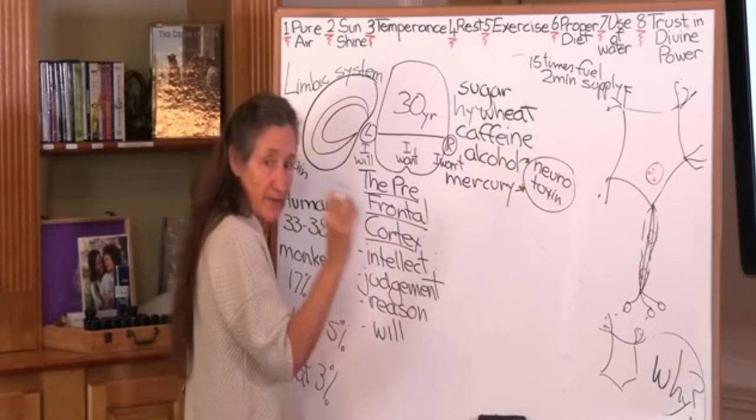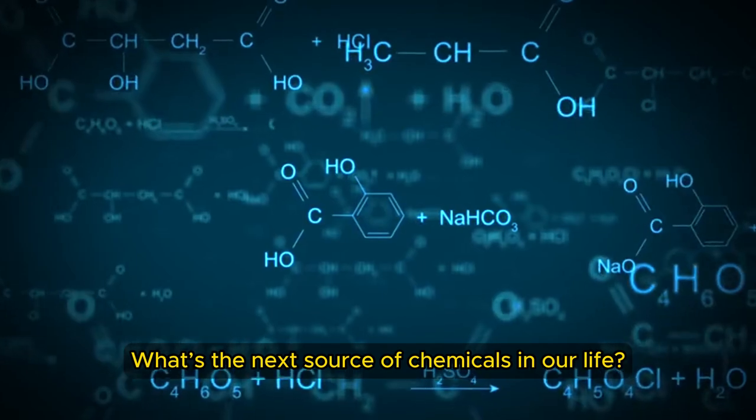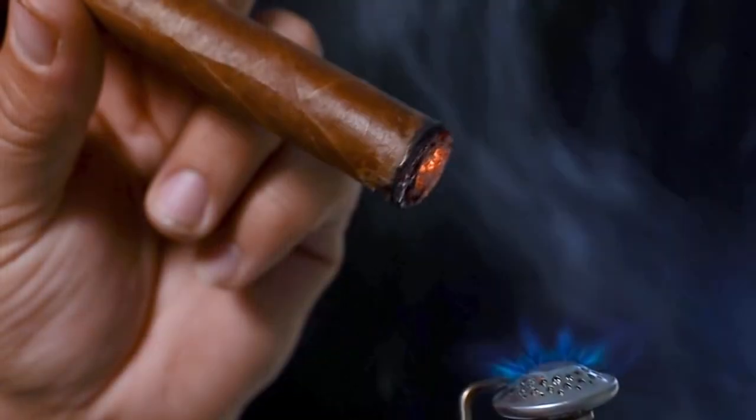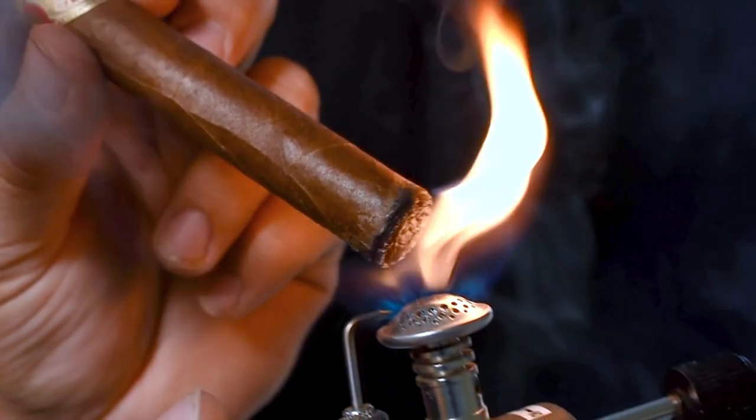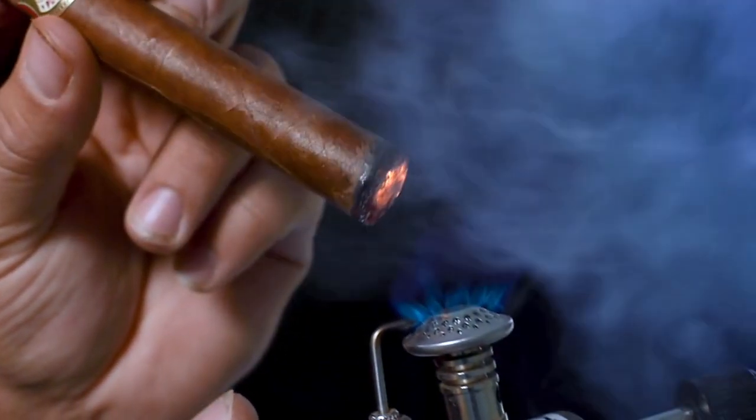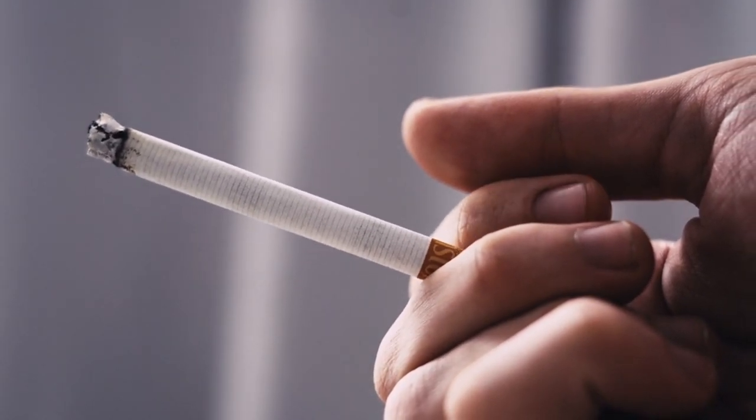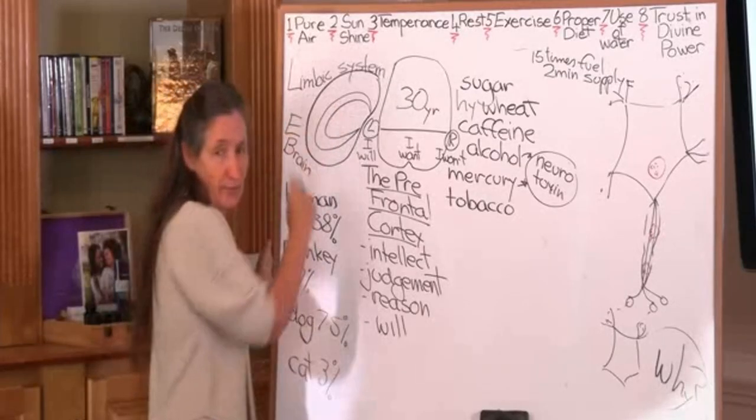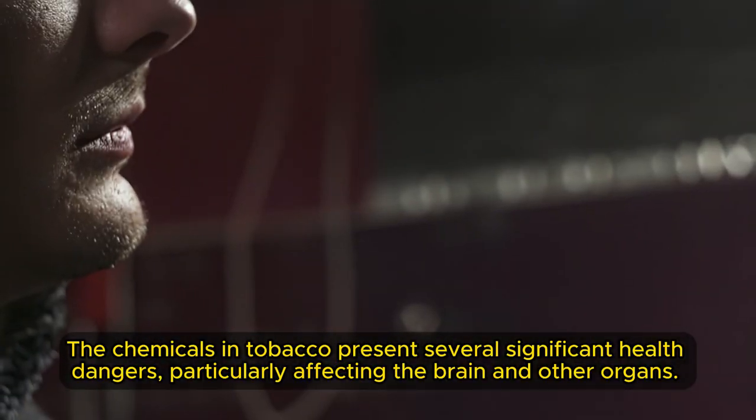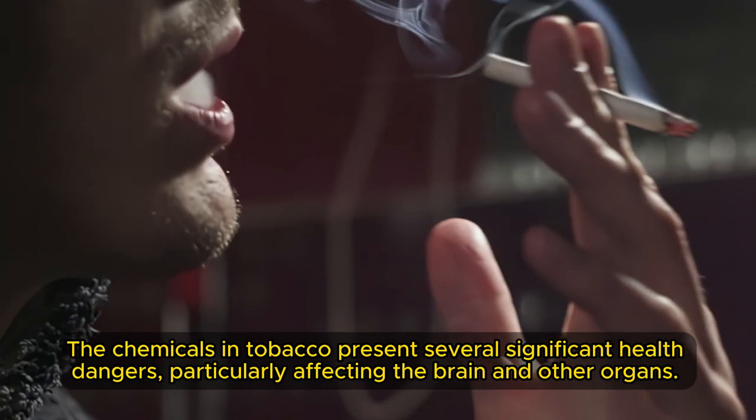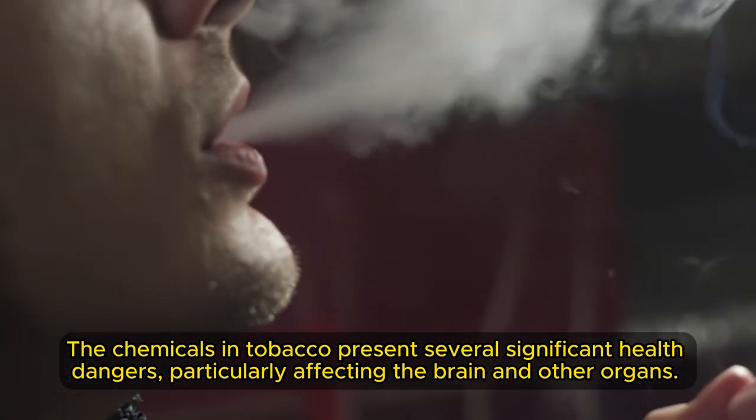Tobacco: there are 4,000 chemicals in a cigarette. Tobacco is one of the most effective ways to block oxygen going to your brain cells. The chemicals in tobacco present several significant health dangers, particularly affecting the brain and other organs.